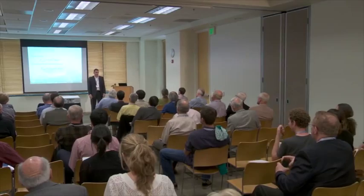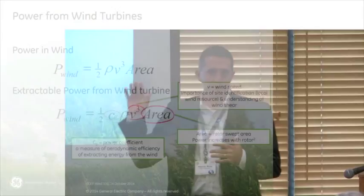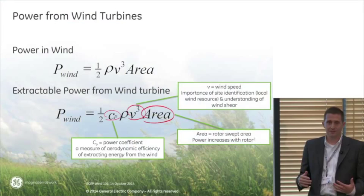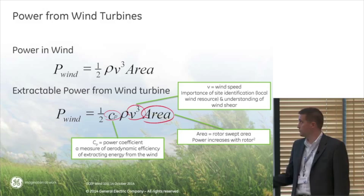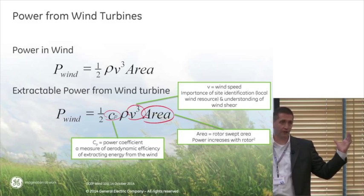I'm not going to do many equations today, but I'll start with one very simple one: how much power is in the wind? There are really only three variables. One is the density of the fluid — it's air, a pretty low density fluid. Then V, the wind speed, which is cubed — so it's really important how much wind there is. And then the area you're actually trying to capture, which is why these wind turbines can be rather large.